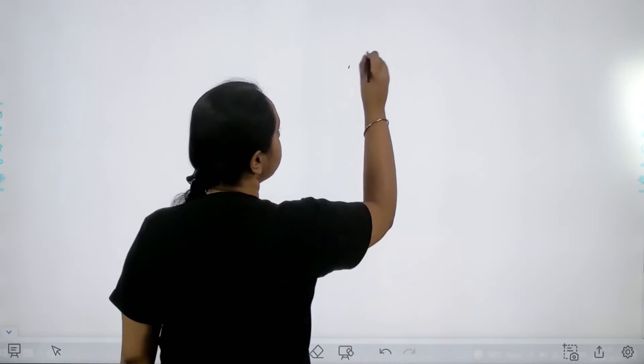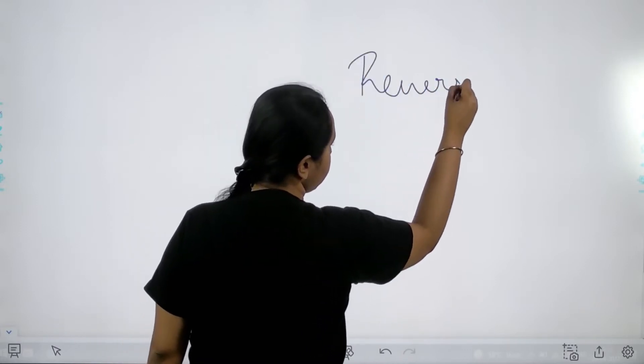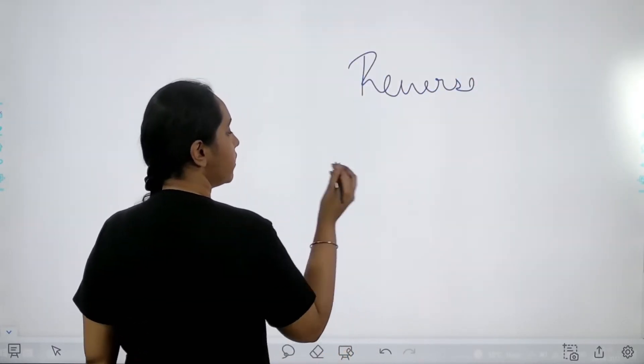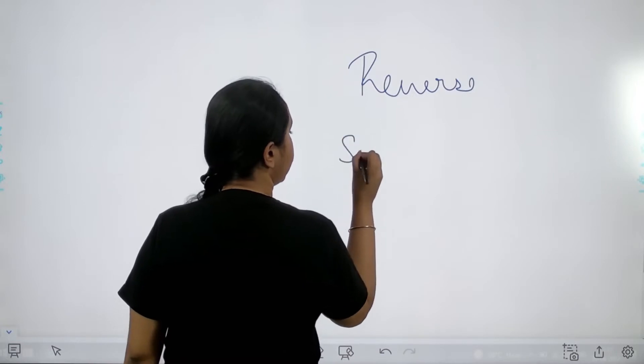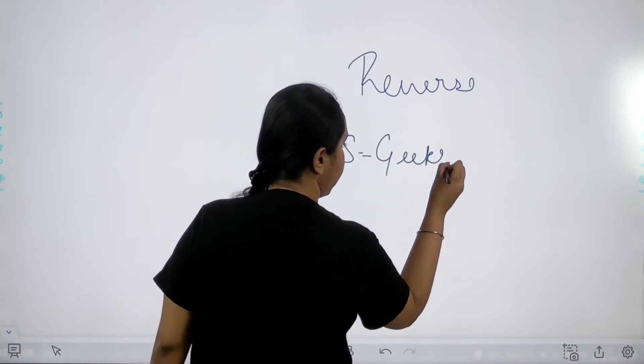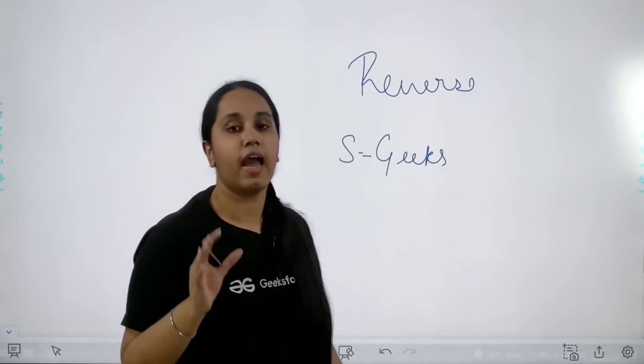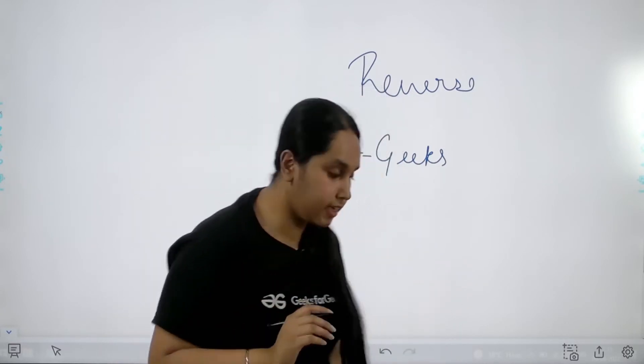In today's problem we need to reverse a given string. Basically we would be given a string, for example s is g e e k s. We are given this string and we need to reverse and print it.